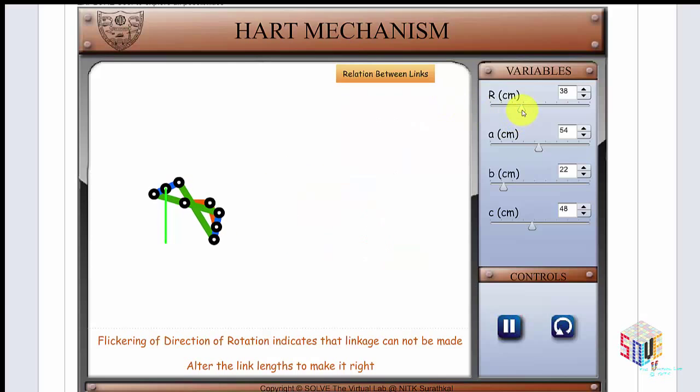Also, if your given parameter is beyond a suitable value for the linkage to form, the direction of rotation button flickers to suggest you change the parameter back to a suitable value.